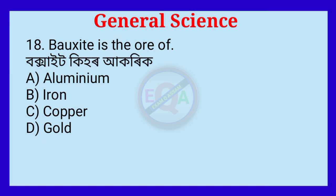Question number 18. Bauxite is the ore of — correct answer: aluminium.